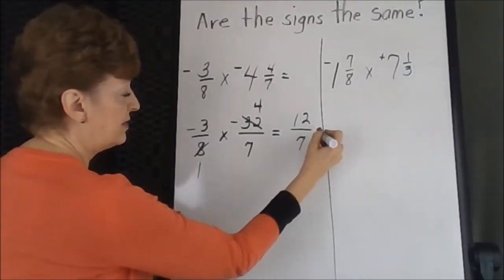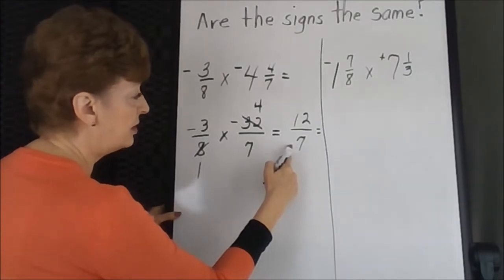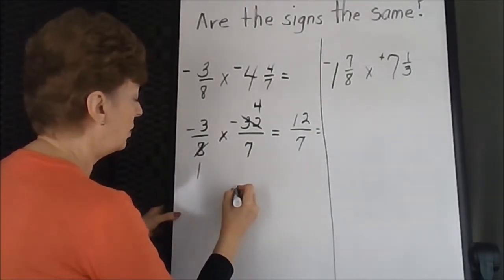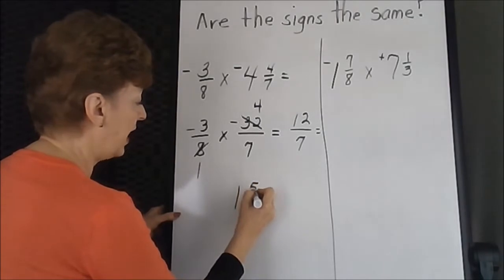1 times 7 is 7. We're going to simplify this fraction, this improper fraction. 7 divides into 12 one whole time with 5 left over.